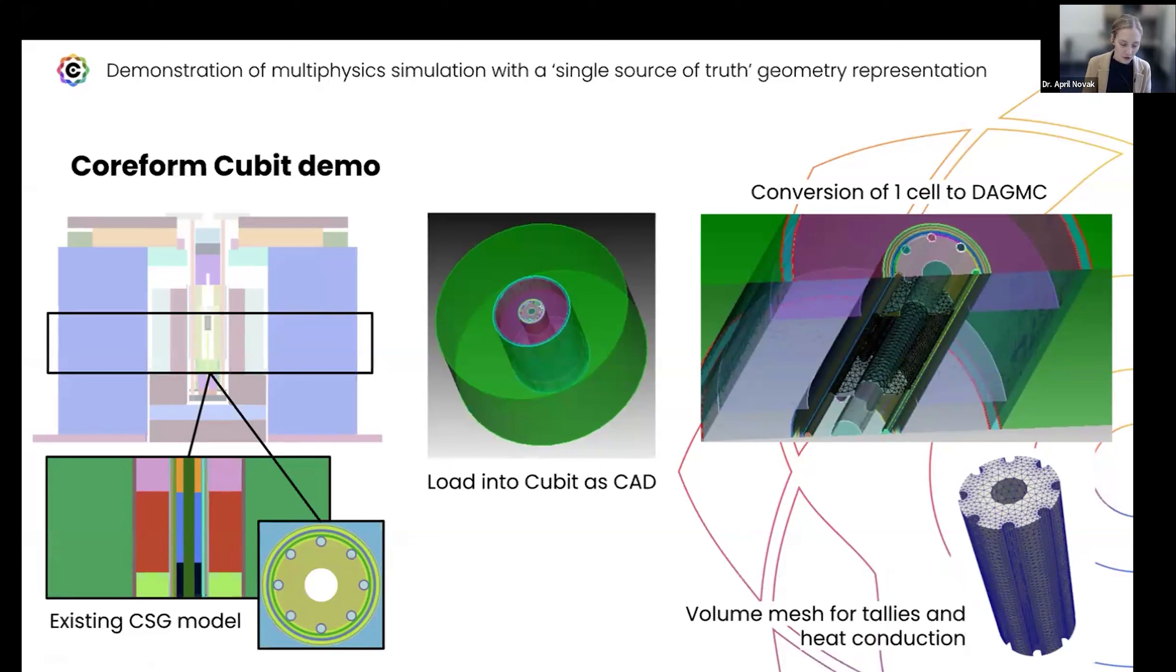One thing that's really powerful about this workflow in Cubit is that these meshes have the exact same boundary mesh, and so they're exactly conformal. They conserve volume and mass, which is really important for these types of criticality applications. And it just makes data transfer so much more straightforward.